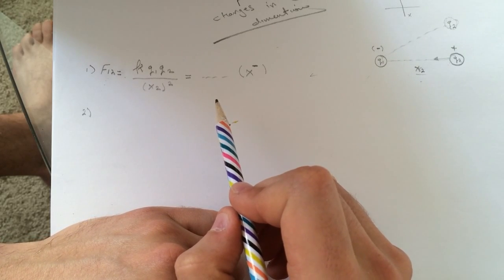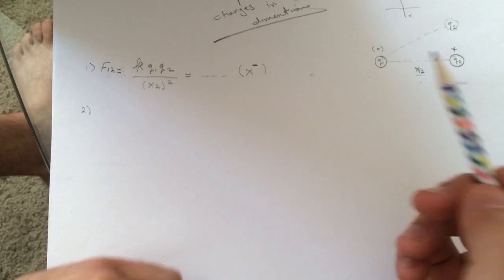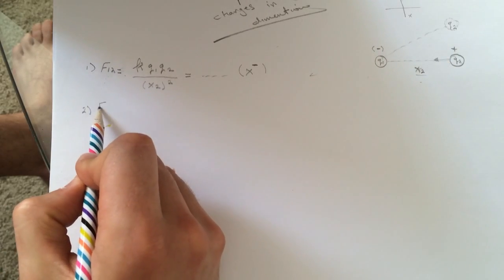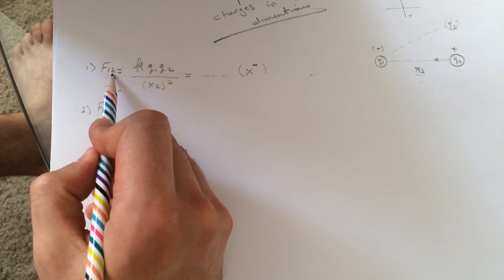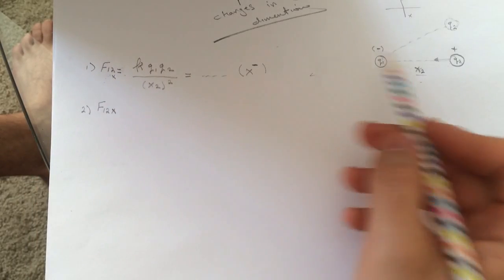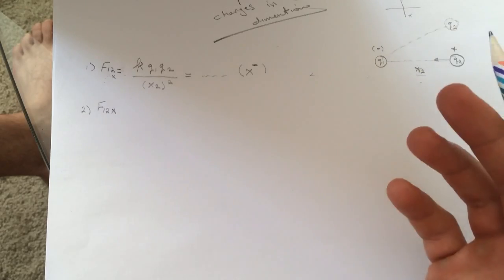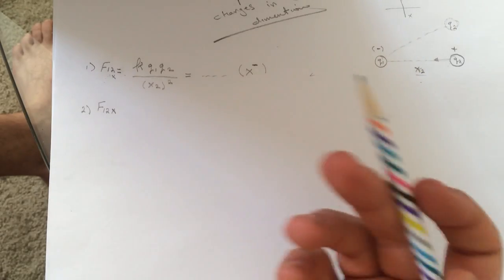It's basically the same thing. They want f1,2, but they want the x direction. Here they want the same, the x direction too, but the whole force is in the x direction. So we didn't need to do the cosine thing.